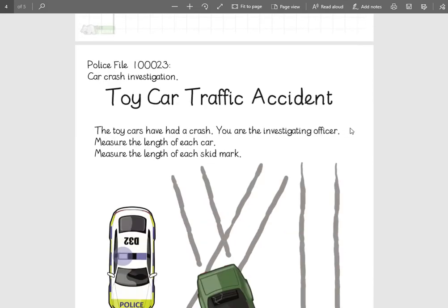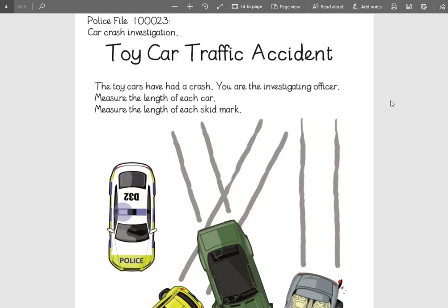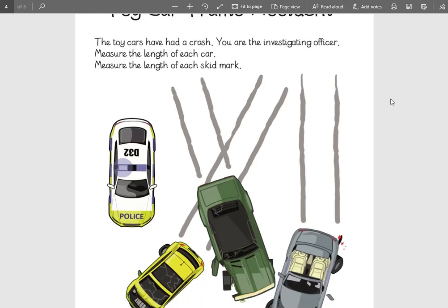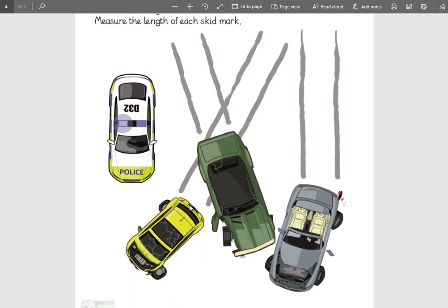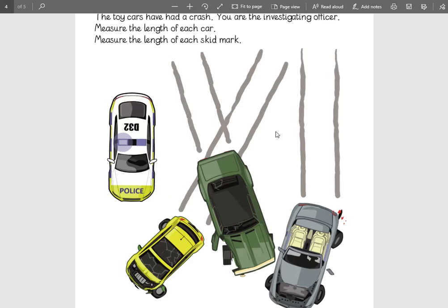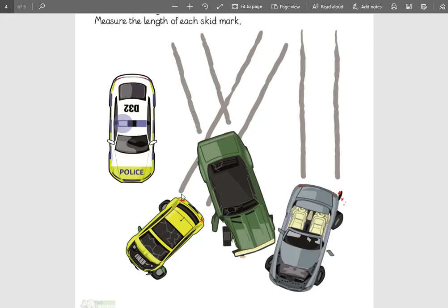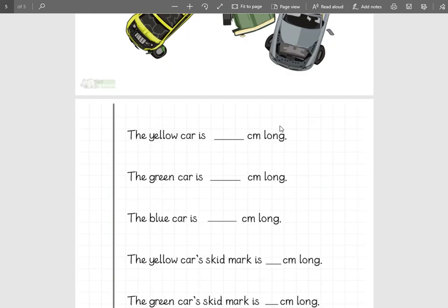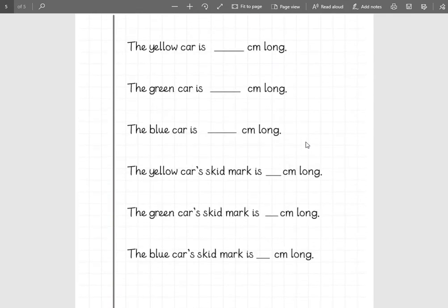We've got a toy car traffic accident. This is the police car crash investigation file. The toy cars have had a crash and you are the investigating officer. Measure the length of each car, and then measure the length of each skid. The yellow skid goes from here to here. You measure all the way along here. The green car's skid goes from here to here, and the blue-gray car goes from here to here. So you can write those answers at the end. If you pause the video, you can have a go at those.